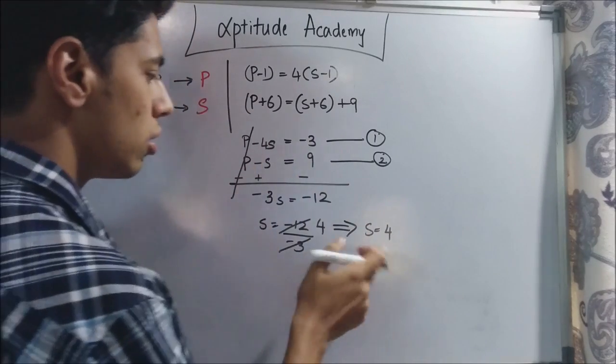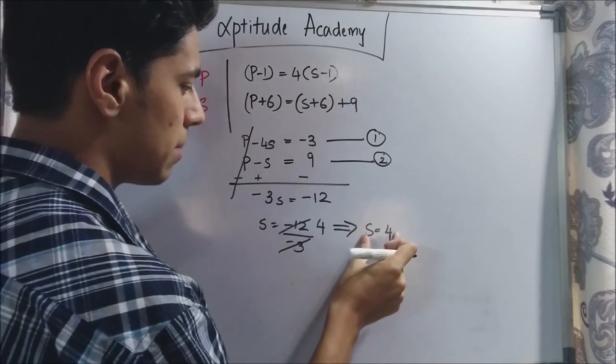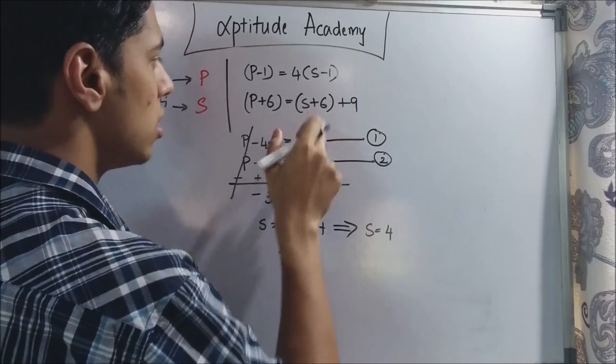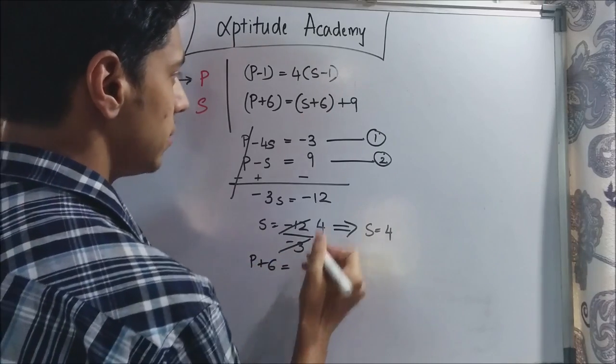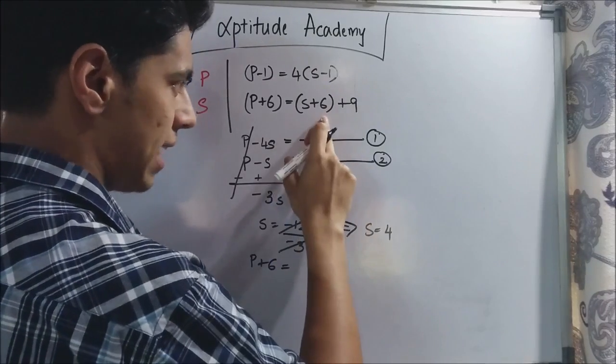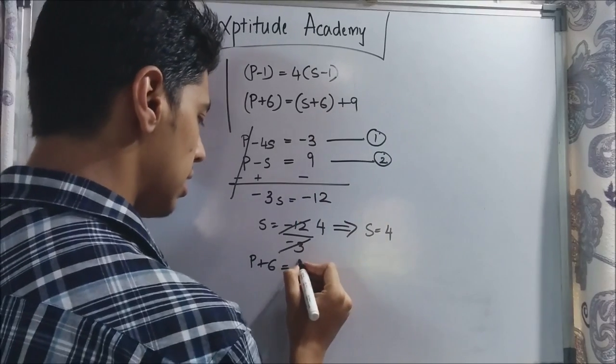Now we go to Priya's age. To find Priya's age we need to just substitute S in any of these equations. So let's take the second one. So now you got P plus 6 is equal to S is 4. 4 plus 6 is 10. 10 plus 9 is 19. So 19.